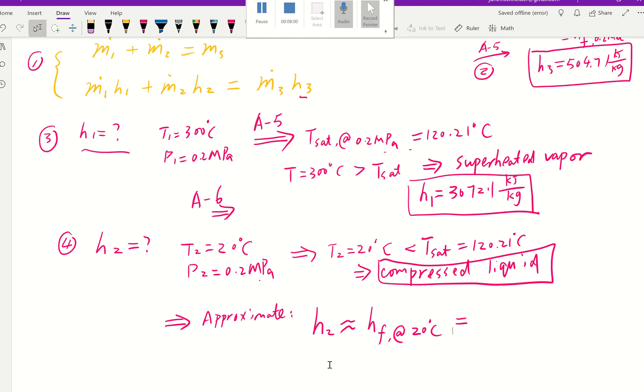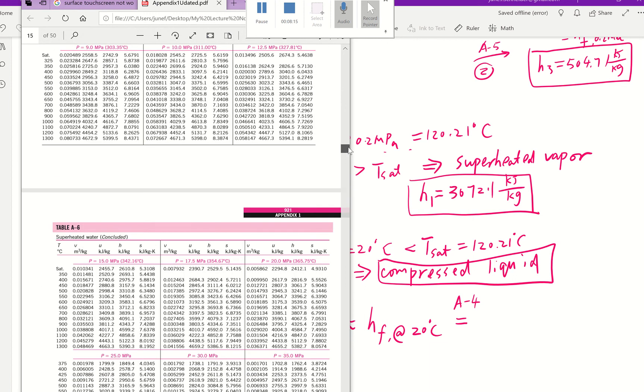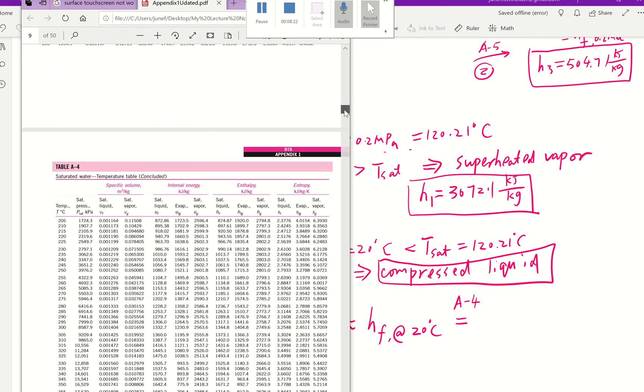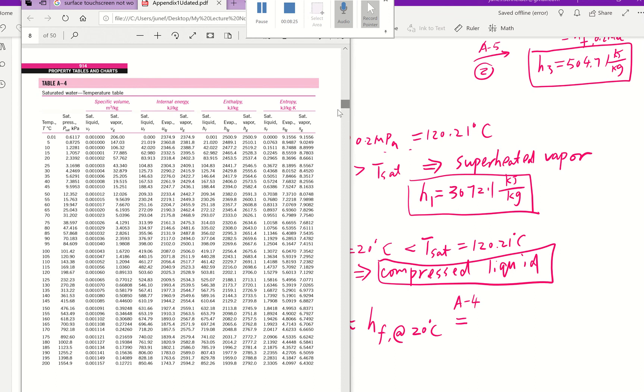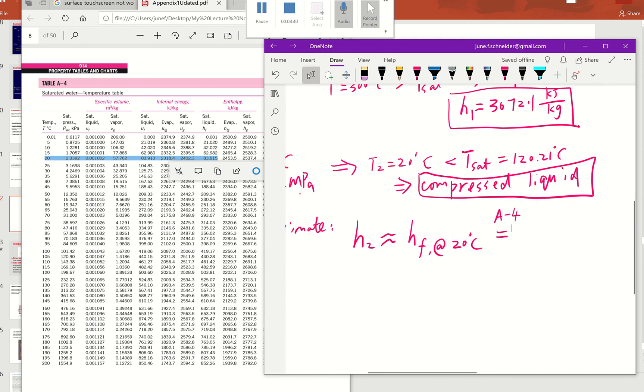Let's go to our temperature table. From here we're going to go to table A-4. A-4 is our saturated liquid temperature table. So table A-4 at 20°C, and we're trying to find hf, so it will be this value. So our hf value is going to be 83.915 kJ/kg. That's our h₂.